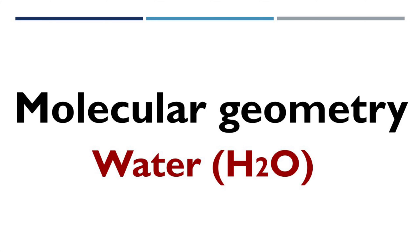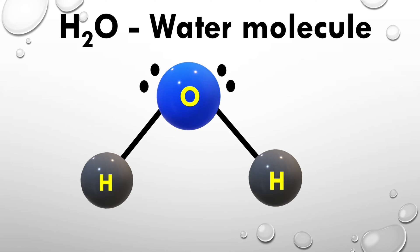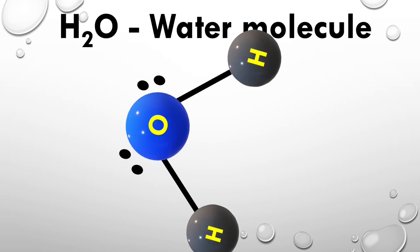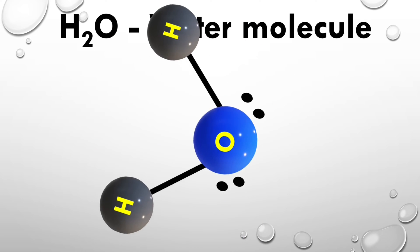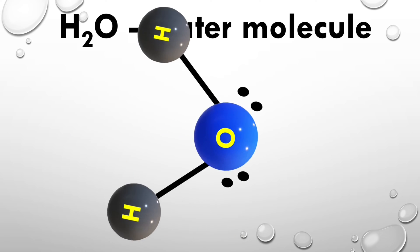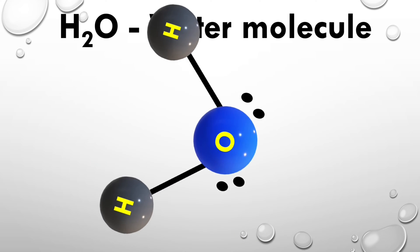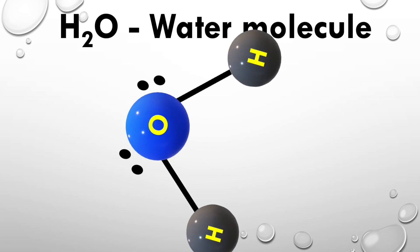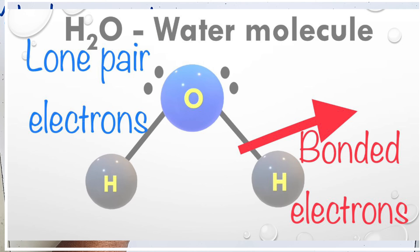Welcome to Aurora Chemistry for Everyone. In this video, let us analyze the molecular geometry of the H₂O water molecule based on VSEPR theory. According to Valence Shell Electron Pair Repulsion theory, the molecular geometry of a molecule depends upon the number of valence electron pairs around the central atom, whether bonded or non-bonded electrons.